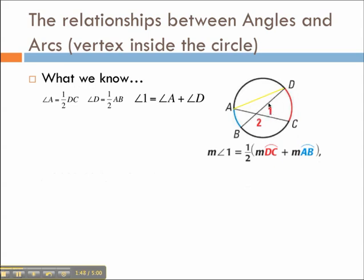And because of the exterior angle theorem, we know that the exterior angle is equal to the sum of the opposite two interior angles. So angle 1 is equal to angle D plus angle A.